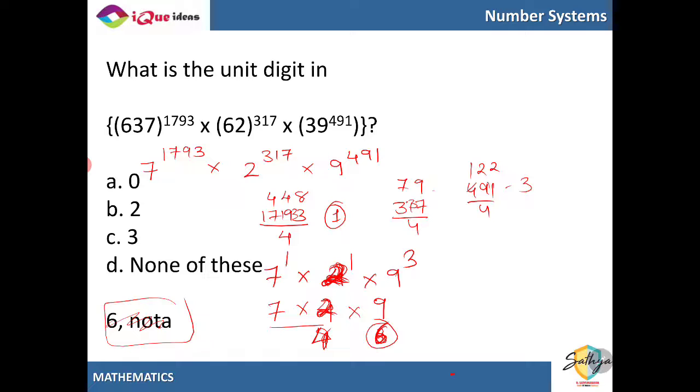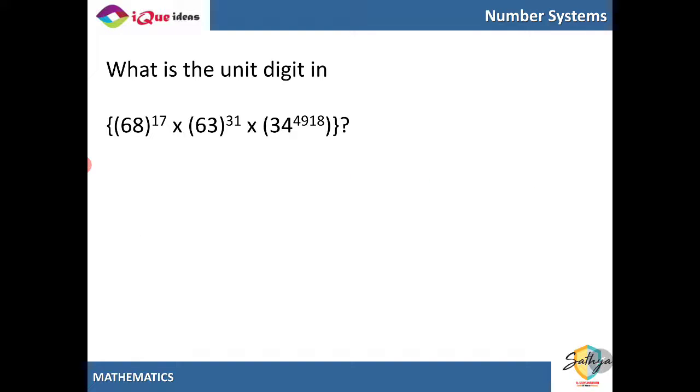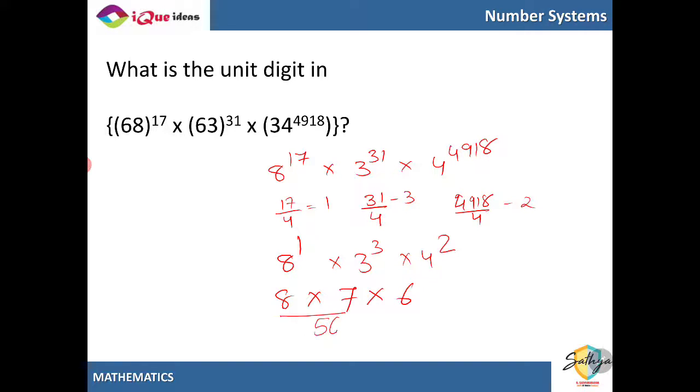Let's take one more example, units place digit of this. So here this is equivalent of 8 to the power 17 into 3 to the power 31 into 4 to the power 4918. 17 divided by 4 gives me remainder 1 so 8 to the power 1. 31 divided by 4 gives me a remainder of 3 so this is 3 raised to power 3. And 4918 divided by 4 will give me a remainder of 2 so this is 4 squared. So 8 into 3 cube 27 last digit 7, 4 square 16. 8 sevens are 56 multiplied by 6, last digit will be equal to 36.